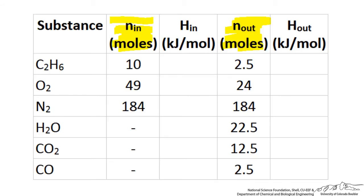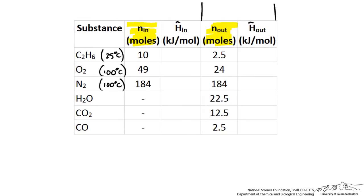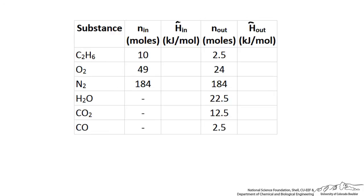We want to figure out the specific enthalpy of each species at the stated conditions. The first step is to choose appropriate reference states so we can look up or calculate the specific enthalpies. Since we are using the heat of formation method, our references are going to be the standard elements: carbon solid, oxygen gas, hydrogen gas, and nitrogen gas at 25 degrees Celsius and one atmosphere. This is a convenient reference temperature with easily looked-up values.